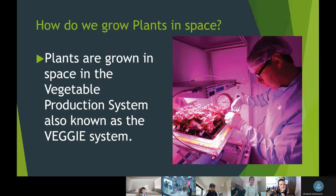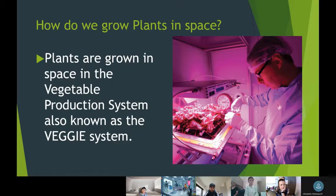How do we grow plants in space? Plants are grown in space in the vegetable production system, also known as the veggie system. This picture shows the veggie system.